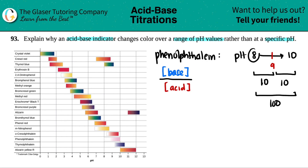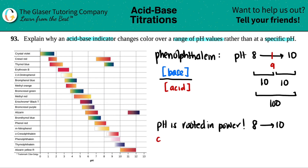That's why it's a range of values and not just one specific value. The pH change is going to happen across that range because pH is rooted in a power. Going from 8 to 10 represents a 100 times change in concentration — the base would have had to increase by a hundred times. That's why it's over a range: it's linked to the power rule, 10 to the 1st times 10 to the 1st equals 100.